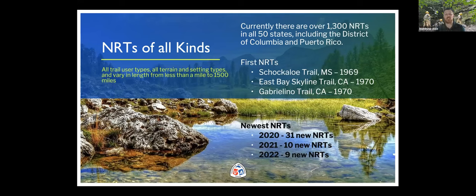There are all kinds of different NRTs. They cover all different uses, terrains, and settings — equestrian, hiking, horseback, ATV, UTV, and all sorts of things can be designated, including water trails. There are currently over 1,300 NRTs covering all 50 states, including the District of Columbia and Puerto Rico. The first NRT was the Shakaloe Trail back in 1969 in Missouri, and new trails continue to be designated each year.